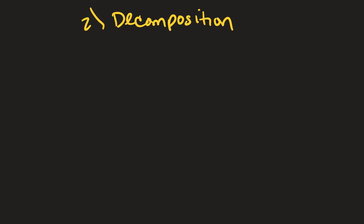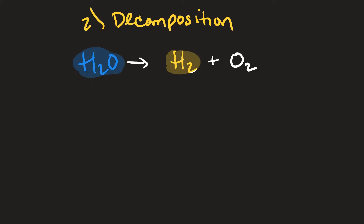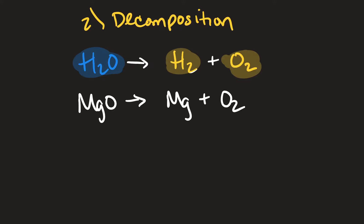Decomposition reactions are the exact opposite of synthesis reactions. For example, the decomposition of water — H2O — decomposes into its smaller pieces. Another example is the decomposition of magnesium oxide, MgO, which decomposes to magnesium and oxygen gas. So we have a larger compound broken up into smaller pieces — that's decomposition.